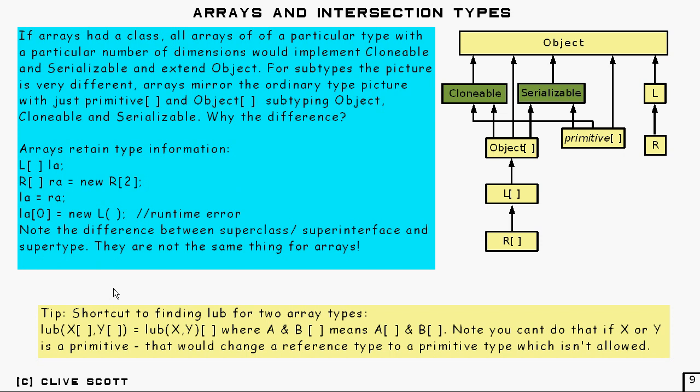So here's a shortcut. If you want to try and find the least upper bound for two array types, like an X array and a Y array, you want to find the least upper bound. It's very simple. You can pull off brackets until you haven't got any more to pull off, basically. Take each of the brackets out. And it's the least upper bound of X and Y. That's an array.